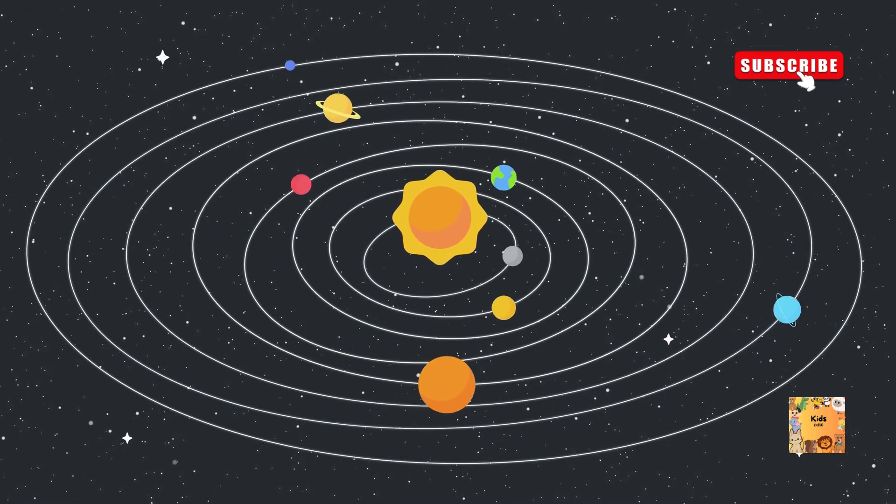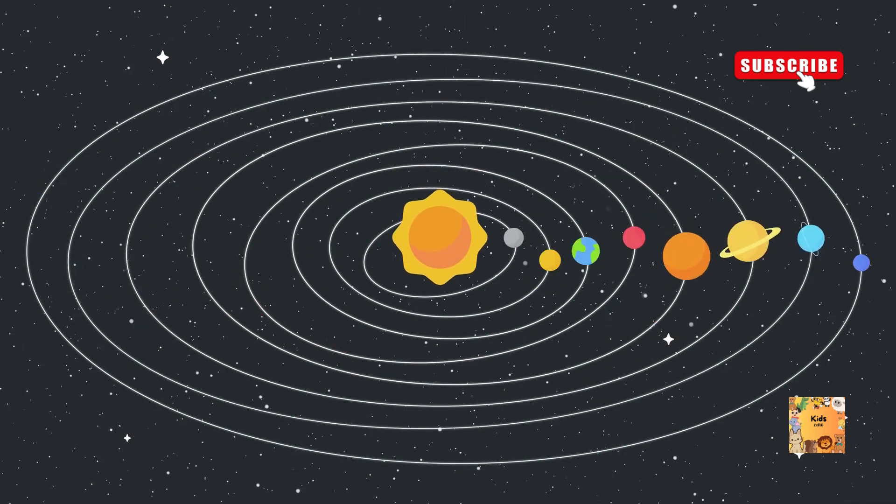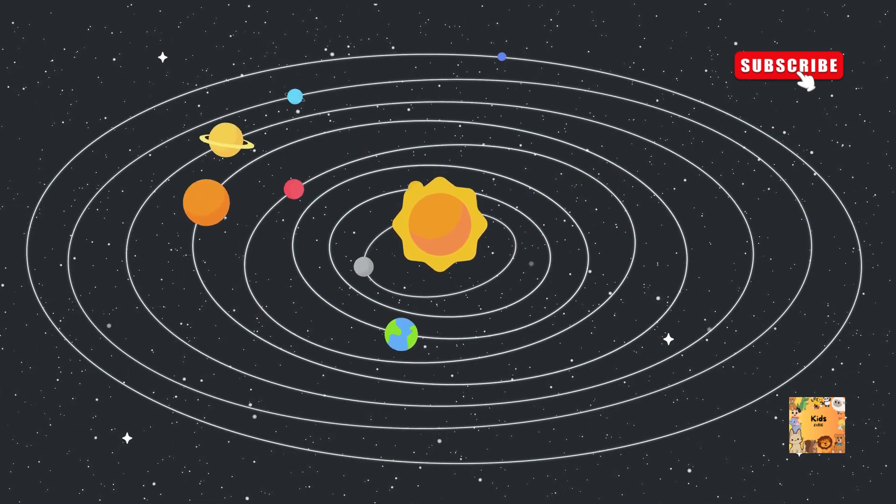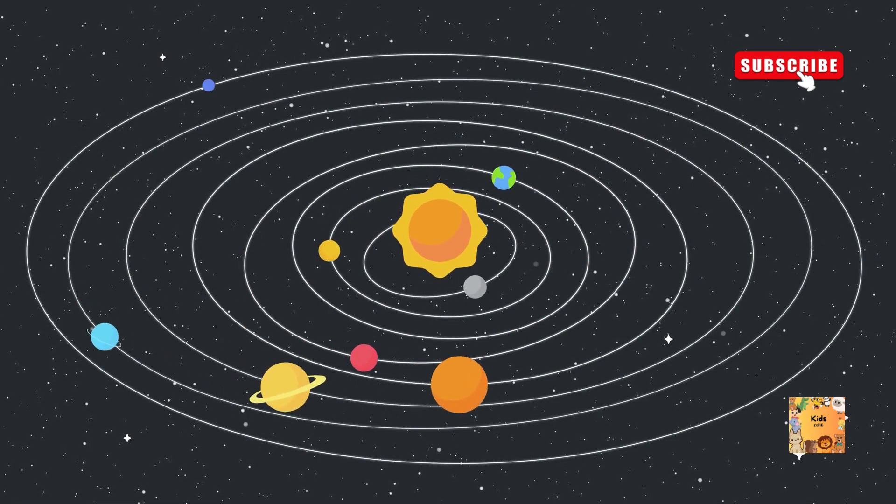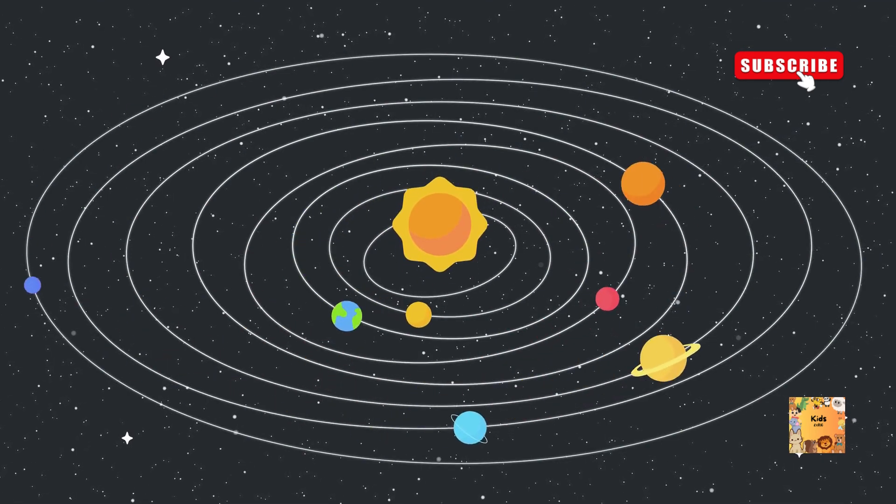Comets. Comets are icy bodies that orbit the sun. They have a nucleus made of ice and dust, and when they come closer to the sun, they develop a glowing tail.